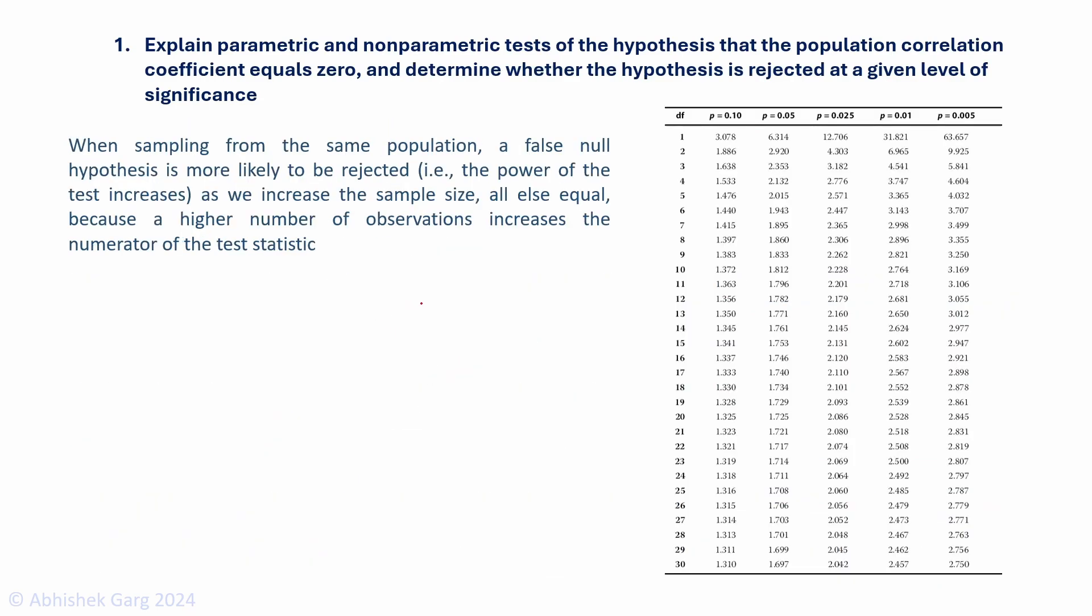When sampling from the same population, a false null hypothesis is more likely to be rejected as we increase the sample size. That means the power of the test increases as we increase the sample size because a higher number of observations increases the numerator of the test statistic.